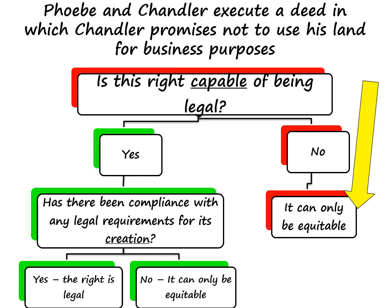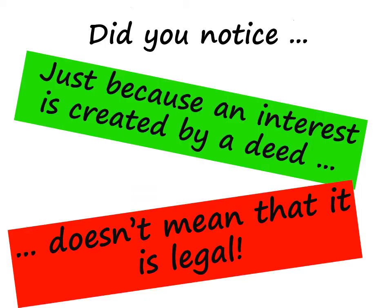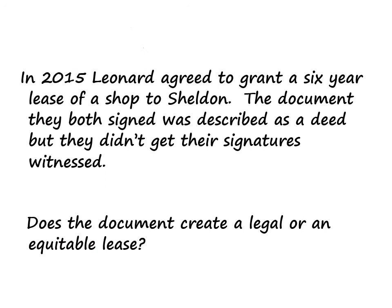We're on the right-hand side in red because this right is not capable of being legal. Here's an important point: did you notice that the restrictive covenant was created by deed? Just because an interest is created by a deed doesn't mean it's legal. That illustrates why it's so important to deal with the first issue before looking at the method of creation — this is a potential trap for an unwary student. Here's a more complex example, which is not for the faint-hearted if you're new to land law, but if you're revising or consolidating your understanding, it's something to get your teeth into.